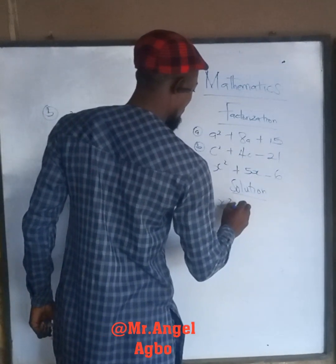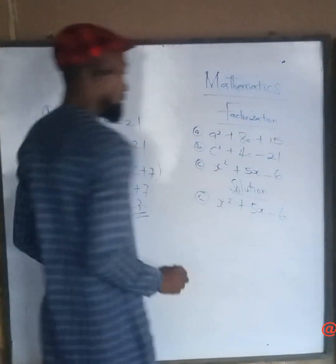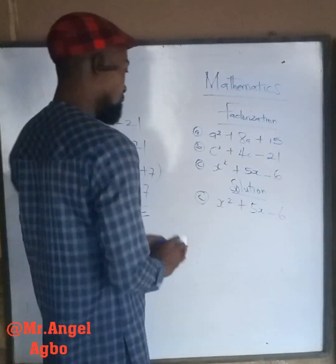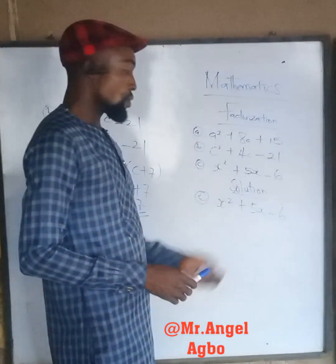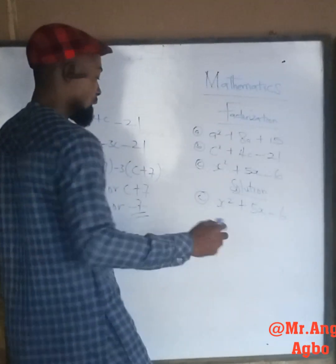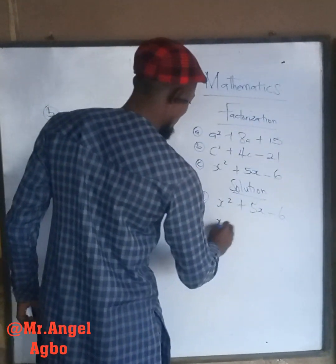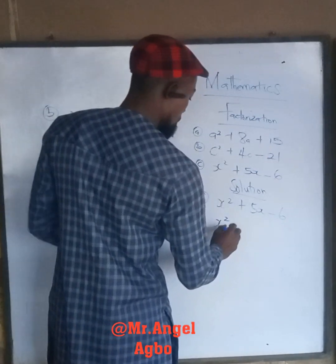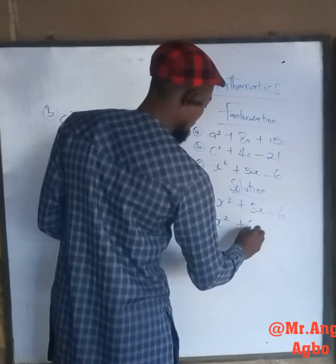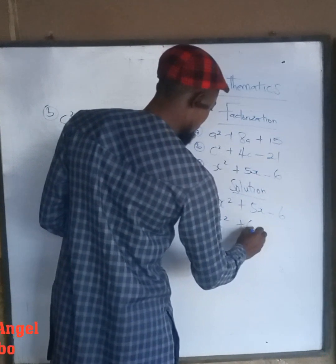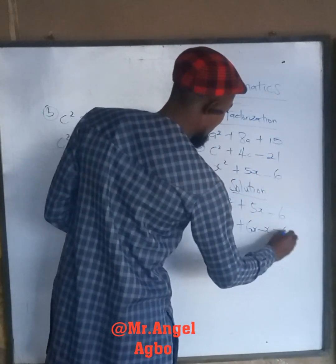The last one: c is equal to x squared plus 5x plus 6. Two numbers that when you multiply them give you 6, and when you add them give you positive 5, is 6 and 1. So we have x squared plus 6x minus x minus 6.